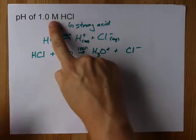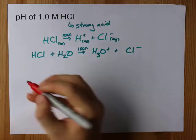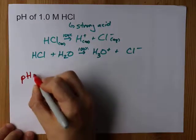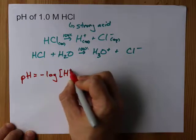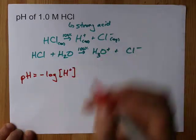What matters is that 1 mole of HCl gives you exactly 1 mole per liter of H+. And the formula for pH is the negative log of H+.